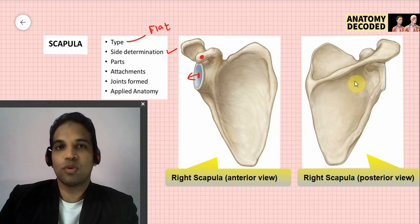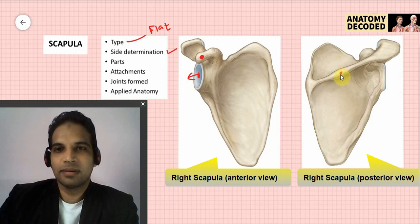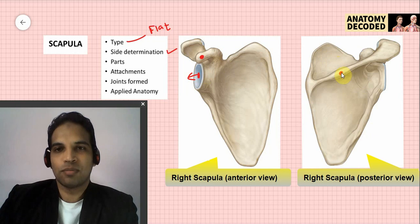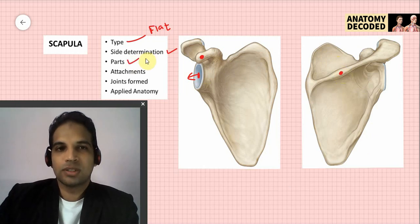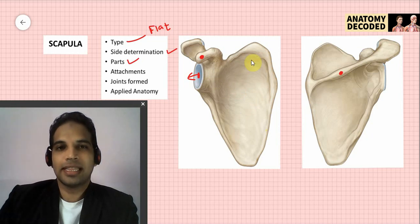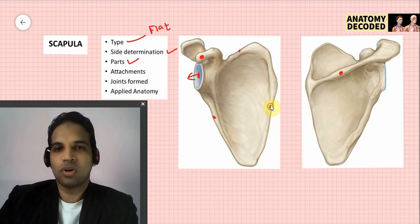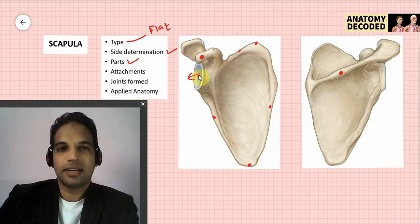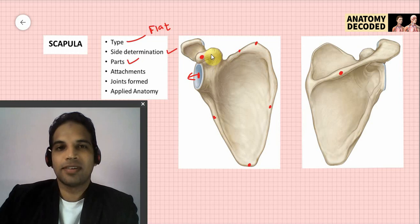Viewed from the posterior aspect, there is the spine of the scapula, which can also be used in side determination. Since the scapula is flattened and triangular, it has three borders — superior, lateral, and medial — and three angles: superior angle, inferior angle, and lateral angle, also referred to as the glenoid angle.